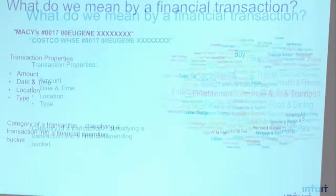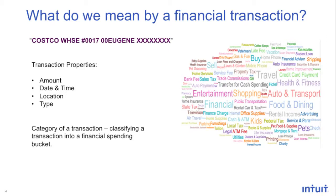Let's look at what we mean by a financial transaction. If there is an exchange of currency between a buyer and a seller, it is defined as a financial transaction. Here we have an example of a financial transaction that a customer has performed using a merchant and a financial amount. Every financial transaction has four properties associated with it: the amount of the transaction, date, time, and location.